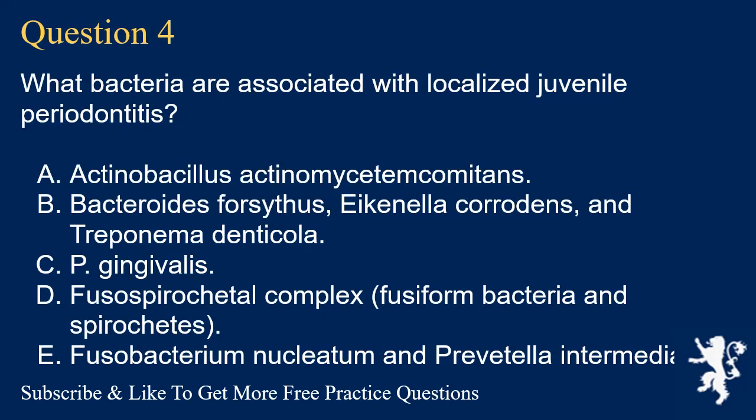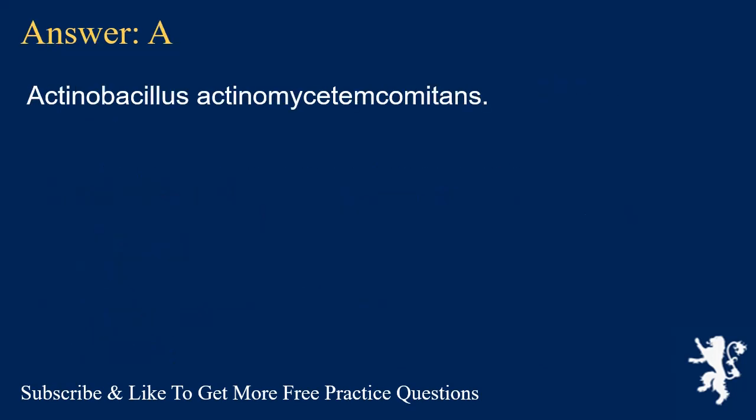Question 4. What bacteria are associated with localized juvenile periodontitis? A. Actinobacillus actinomycetemcomitans. B. Bacteroides forsythus, Eikenella corrodens, and Treponema denticola. C. P. Gingivalis. D. Fusospirochetal complex, fusiform bacteria and spirochetes. E. Fusobacterium nucleatum and Prevotella intermedia. Answer: A. Actinobacillus actinomycetemcomitans.